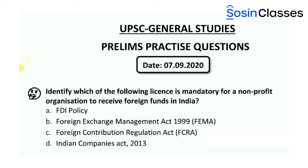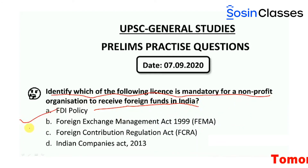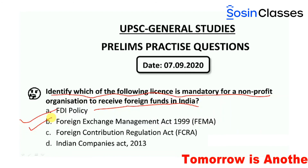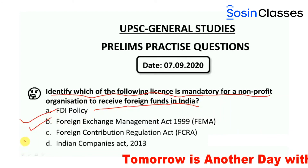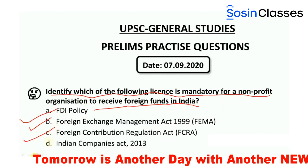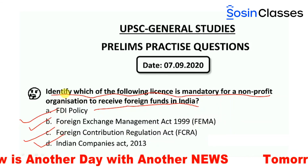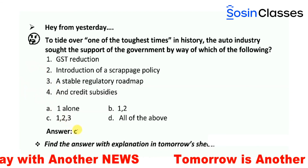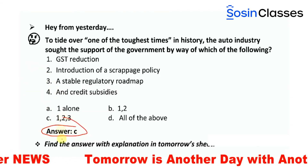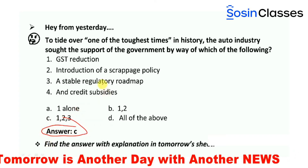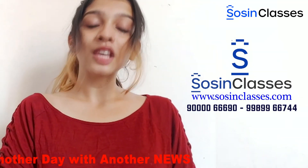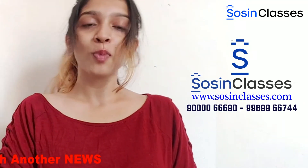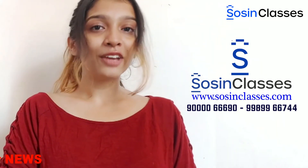Here is a preliminary practice question: identify which of the following licenses is mandatory for a non-profit organization to receive foreign funds in India — FDI policy, Foreign Exchange Management Act 1999 (FEMA), Foreign Contribution Regulatory Act (FCRA), or the Indian Companies Act 2013. The answer to yesterday's question is option C — find the answer with explanation in tomorrow's sheet. That's a wrap on your news podcast; tomorrow is another day with another news. Thank you.